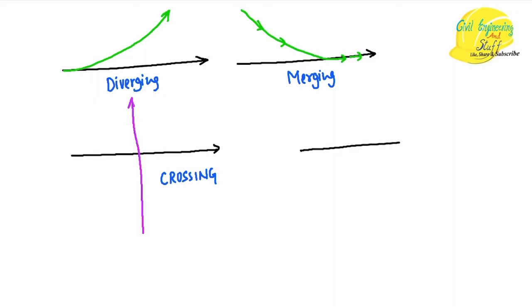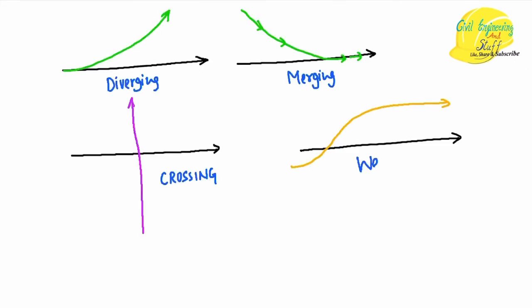Within a traffic stream, there is also a weaving action — traffic going in the same direction that weaves in between, finds its pace, and moves along the traffic stream. This is called the weaving motion. So these are the most common forms of actions we observe in daily life: diverging traffic, merging traffic, crossing traffic, and weaving traffic.